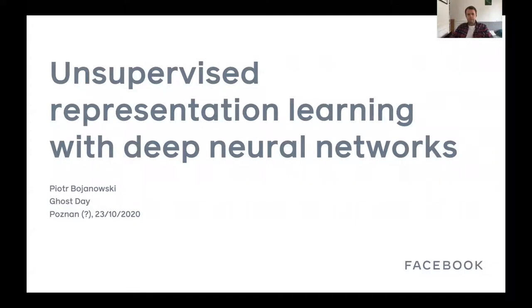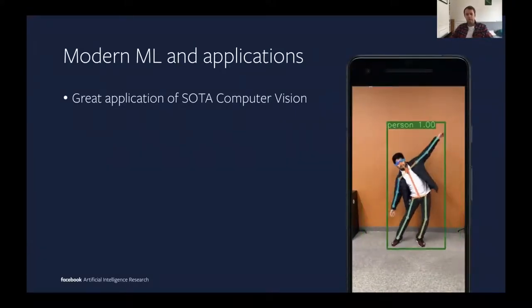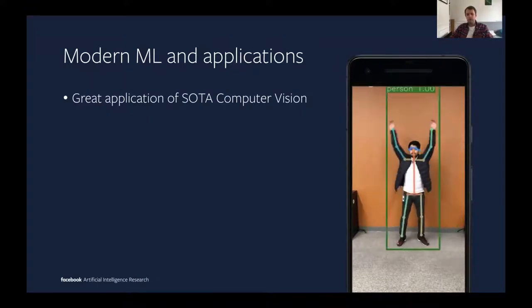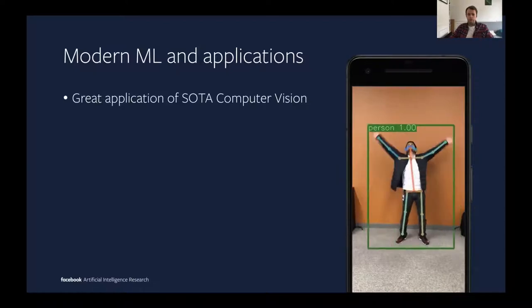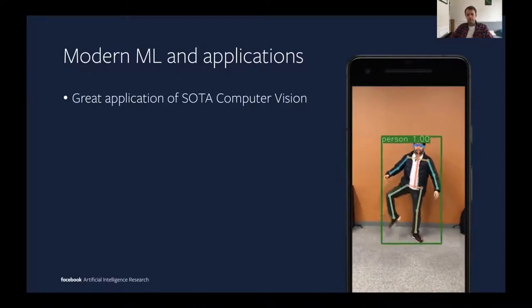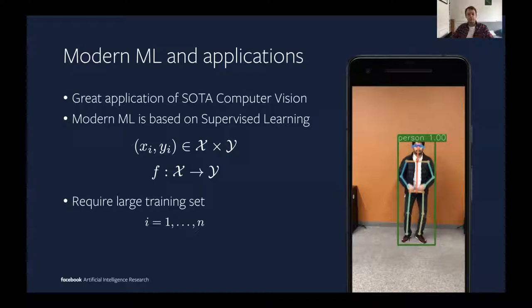I personally work on computer vision and over the last years we've seen amazing applications based on machine learning working. Systems such as person recognition and pose identification are working really well — they can do inference on small devices such as mobile phones. These systems are all the product of great state-of-the-art computer vision systems, based on machine learning and in particular on the concept of supervised learning: the fact that you have annotated data comprised of an image and a label, and you learn a function mapping from image to label set.